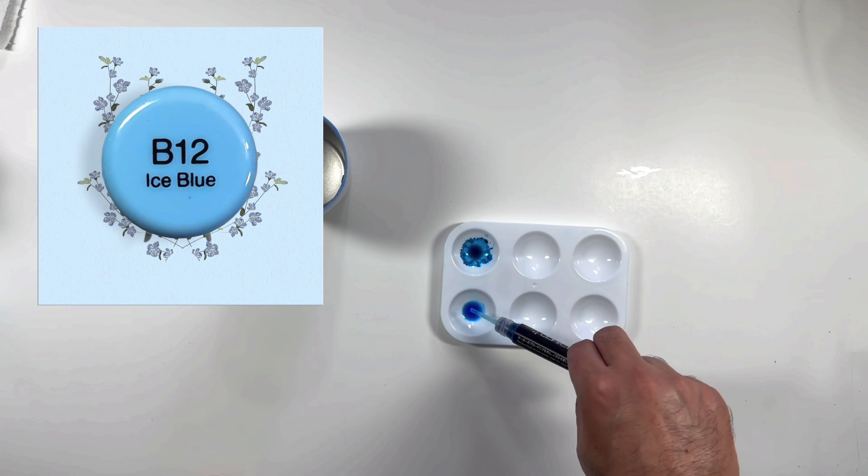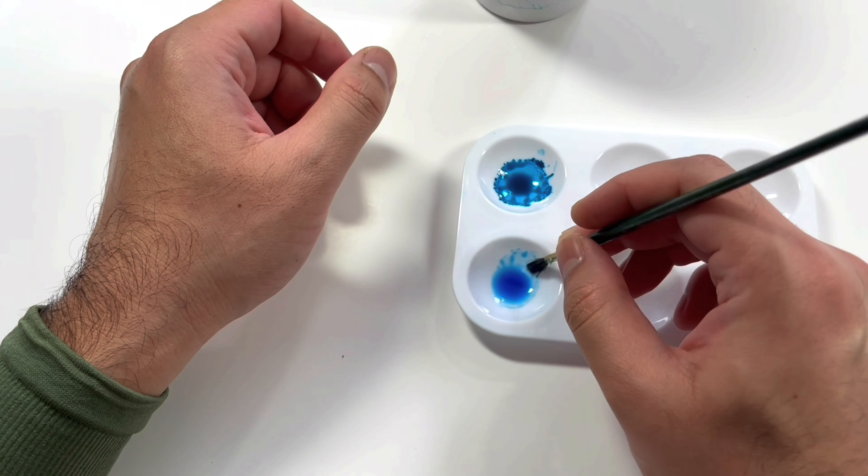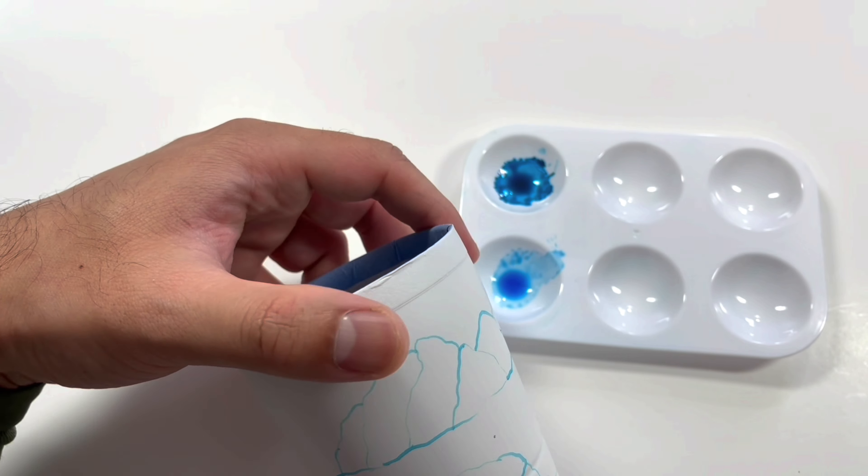This is our second shade, the ice blue. Using a tiny paintbrush to give it some color to the inside borders of the icebergs and mountains.